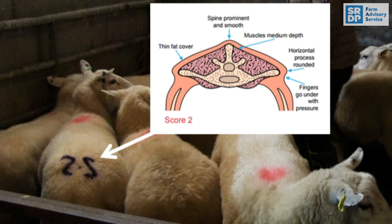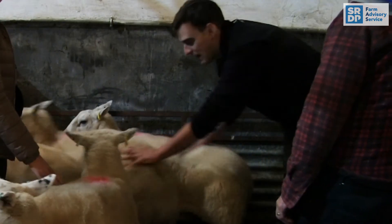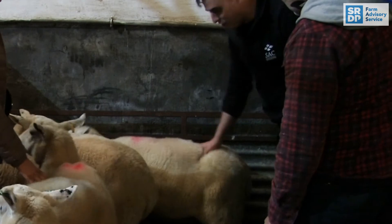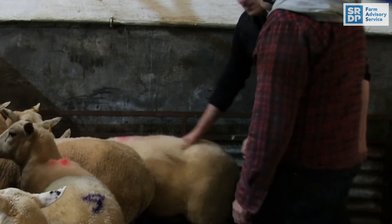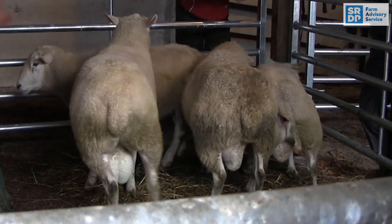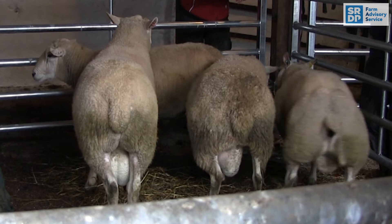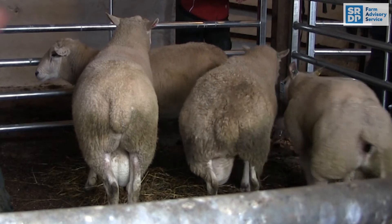In commercial situations we rarely find ewes at a condition score of five, which are excessively fat and where you can't feel the spine processes even with firm pressure. Rams would be expected to be in a condition score of three and a half to four.